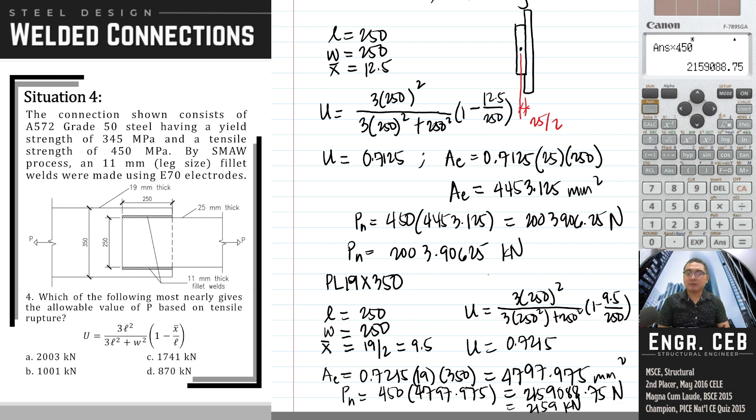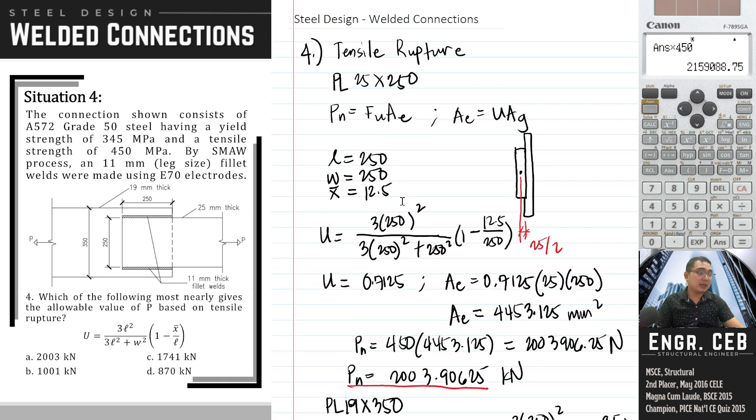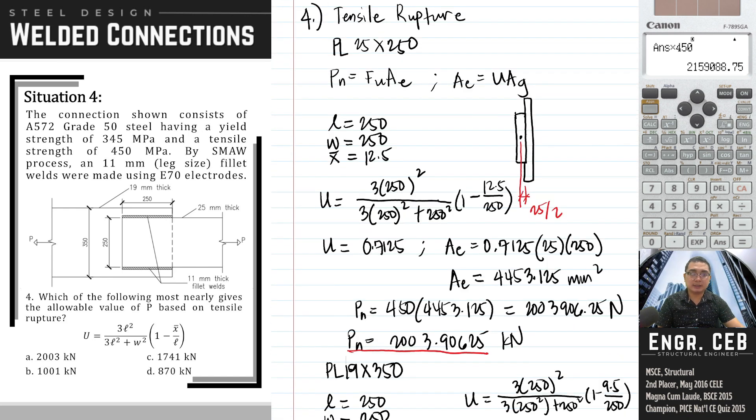The governing value between the two plates is the smaller one, which is 2003.91 kN. This is what we'll use in determining the allowable value of P.